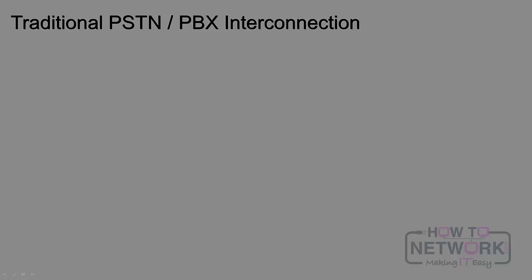I'm going to sketch out what the PSTN typically looks like. This circle represents the public switched telephone network. The PSTN is comprised of a bunch of various central offices — we call these COs — and they're interconnected and signaled with something we call SS7. We don't have to worry about that too much from the end user perspective, but that's the magic that makes the PSTN happen.